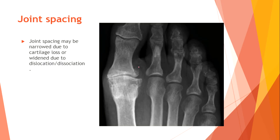Joint spacing. Joint spacing may be narrowed due to cartilage loss, or widened due to dislocation or dissociation. Here we have an example of loss of joint spacing, and in another image there is no joint space at all.